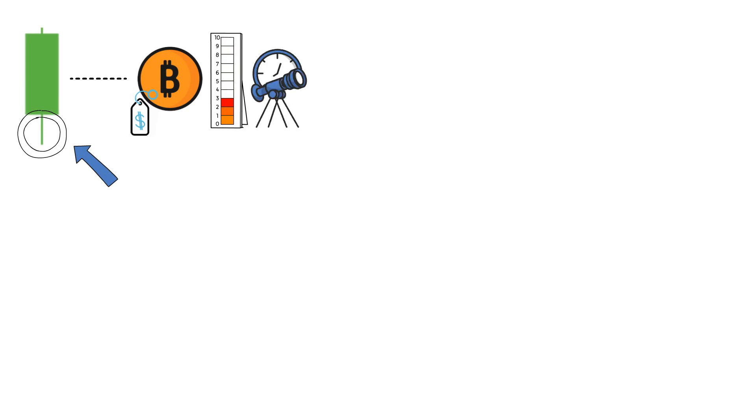Now, if the wick on the bottom of the candlestick is longer, this signifies the opposite. It shows that the asset's price fell significantly during the set time period, but eventually recovered, and its closing price was higher than the opening price. Therefore, such a candlestick would be green.